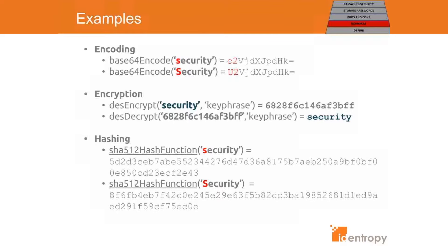With encryption, I'll use a hypothetical DES encryption function to encrypt the word 'security' all lowercase using the key 'keyphrase', and this will produce an encrypted output. Now if this message were to be sent in an email it would actually be secured, and if my recipient knows my secret key of 'keyphrase' then this message can be decrypted to retrieve the original text.